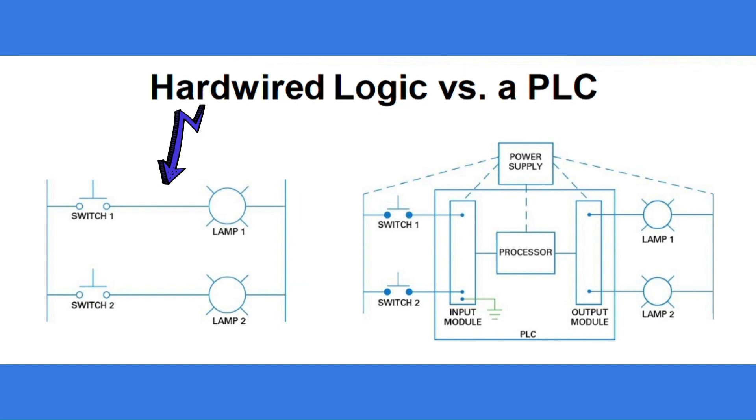The big difference is that the hardwired system controls the output devices directly with the input devices. The PLC's processor performs all interactions, so the relationship between input and output is indirect.